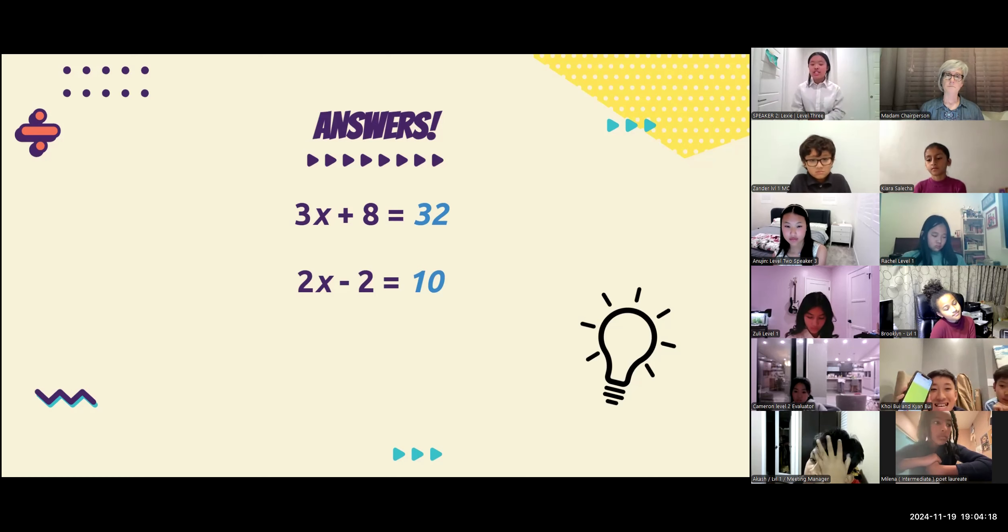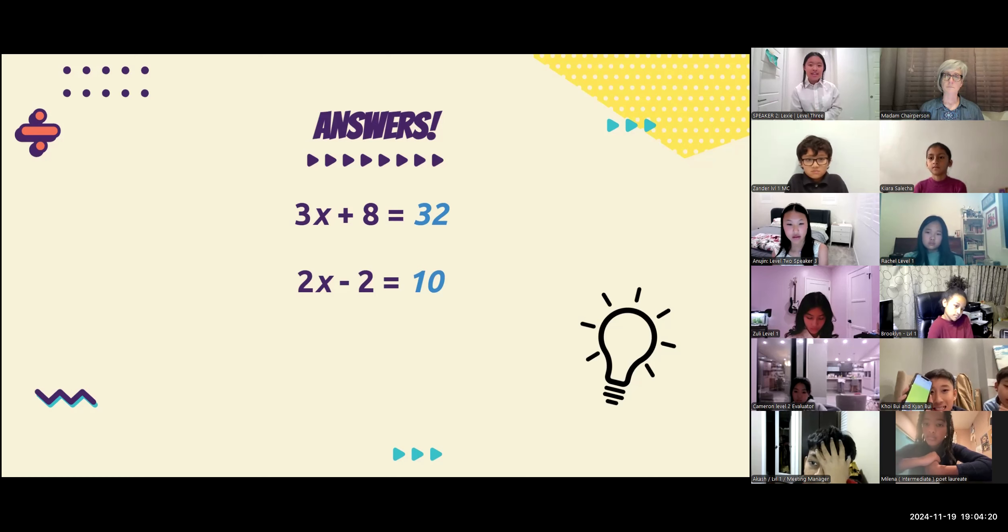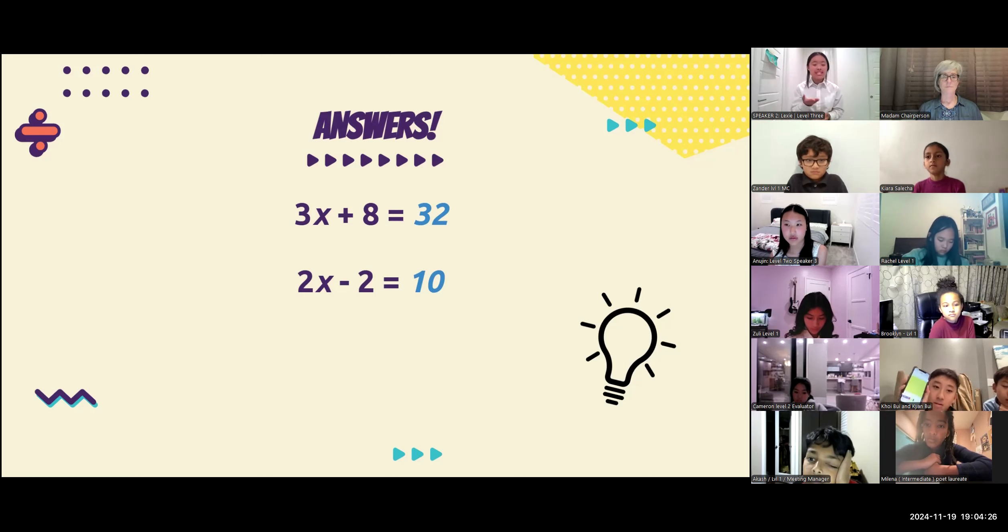And then for the second equation, the answer was the number 10. And why is that? Well, that's because if you plug 6 into this equation, replacing x, 2 times 6 is 12. Solve from there and you'll get the number 10.